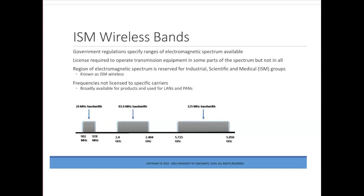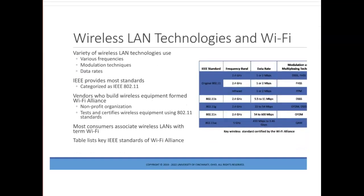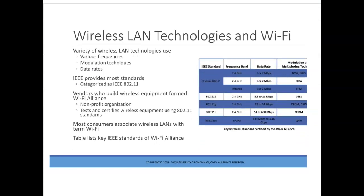ISM stands for industrial, scientific, and medical. There are a variety of wireless LAN technologies that use various frequencies, modulation techniques, and data rates. IEEE provides most of these standards, which are categorized as IEEE 802.11. The Wi-Fi Alliance was formed by a group of vendors who build wireless equipment. This non-profit organization tests and certifies wireless equipment using the 802.11 standards. Over the years, this alliance has received extensive marketing, so many consumers associate wireless LANs with the term Wi-Fi. The table lists the key IEEE standards that fall under the Wi-Fi Alliance.